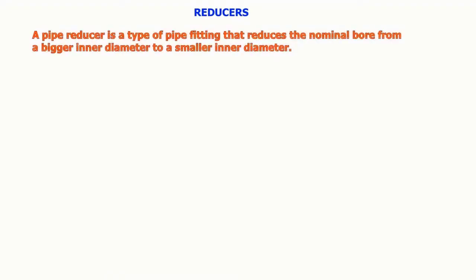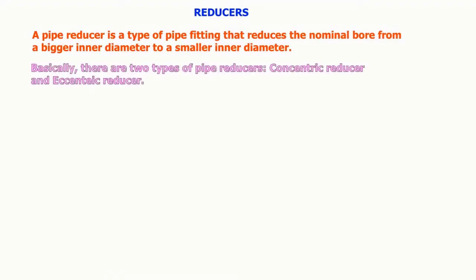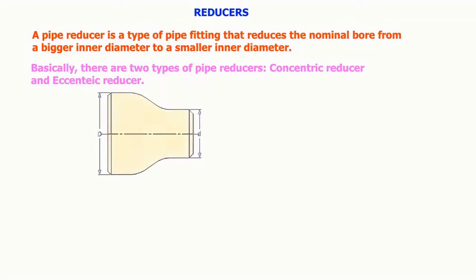A pipe reducer is a type of pipe fitting that reduces the nominal bore from a bigger inner diameter to a smaller inner diameter. Basically there are two types of pipe reducers: concentric reducer and eccentric reducer.